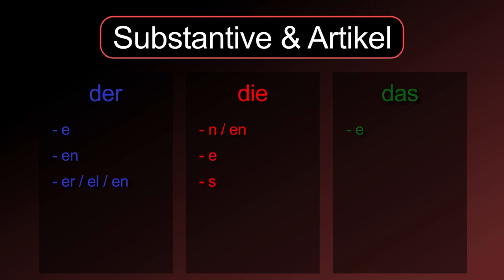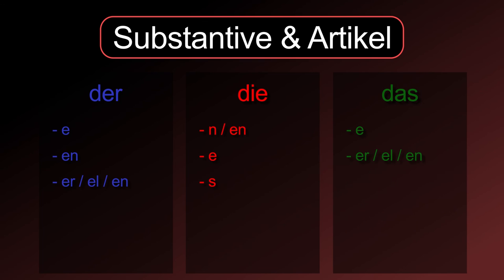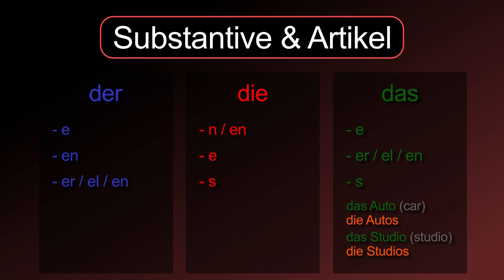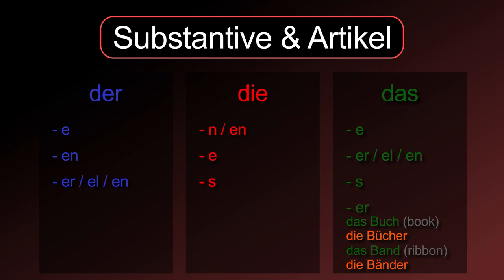For neuter nouns, the most important plural suffix is also -e: die Spiele, die Klaviere. Words that end on -r, -l, or -n will not change: die Messer, die Rätsel. Words that end on -a, -o, or -y will get the suffix -s: die Autos, die Studios. Neutral nouns with only one syllable will often get the suffix -er: die Bücher, die Bänder.